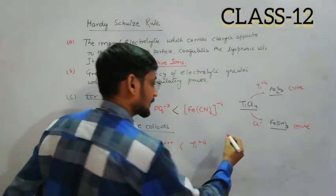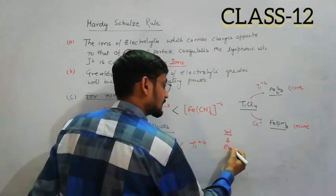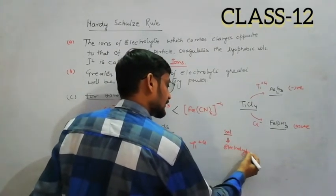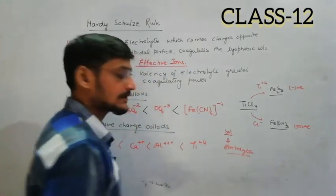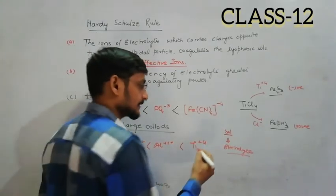Now firstly we will discuss coagulation. In coagulation, what happens is we add an electrolyte to any sol. The oppositely charged ion of the electrolyte neutralizes the sol and coagulates it.